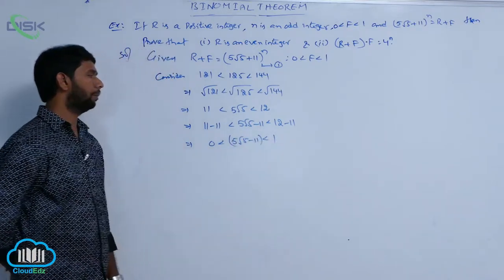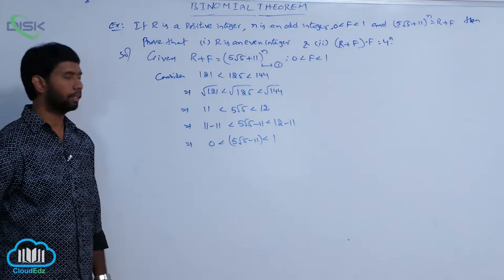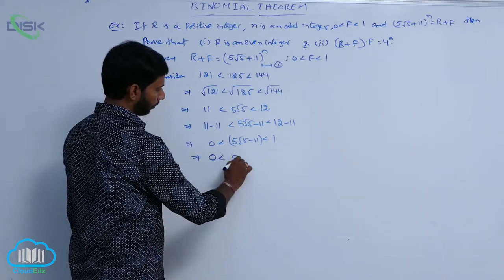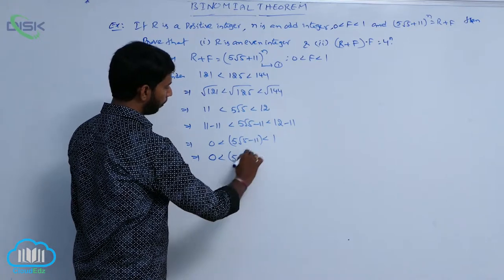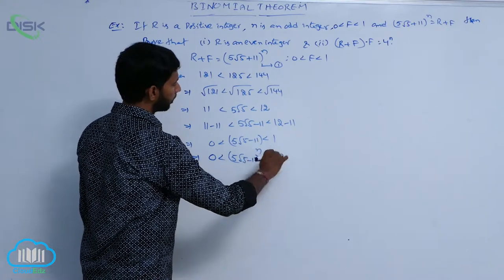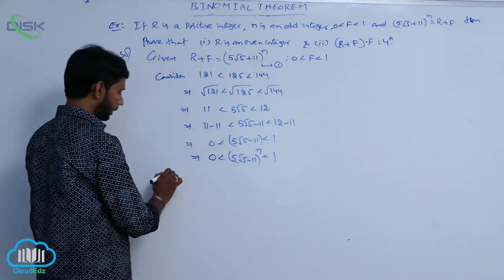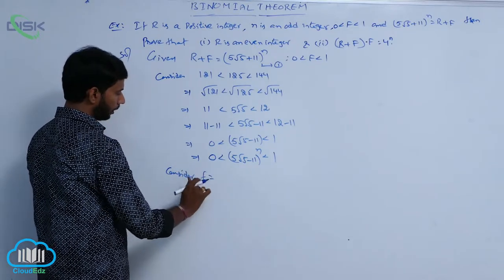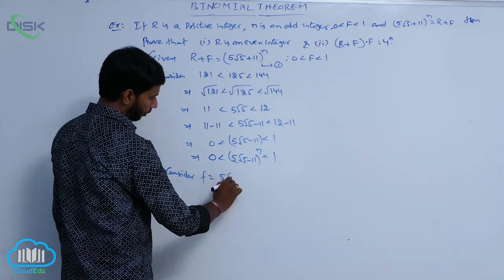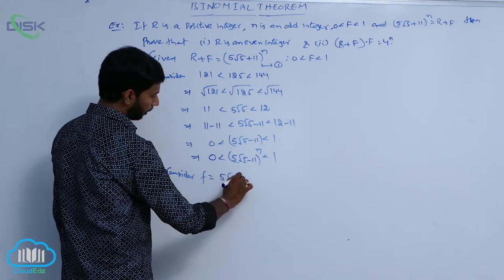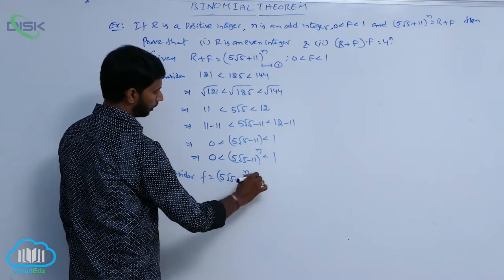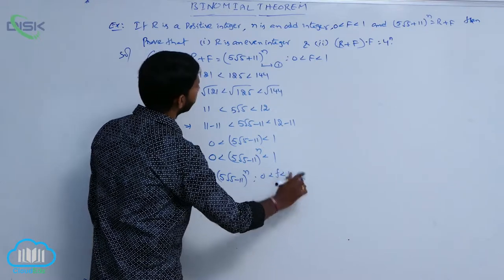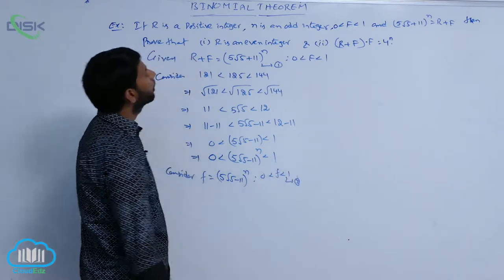So 0 < 5√5 − 11 < 1. Taking the nth power on both sides: 0 < (5√5 − 11)^n < 1. Define small f = (5√5 − 11)^n, with 0 < f < 1. This is condition number 2.